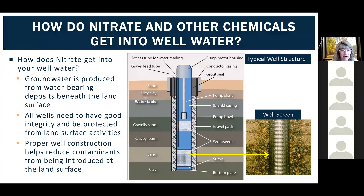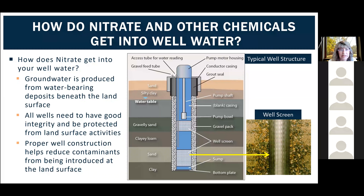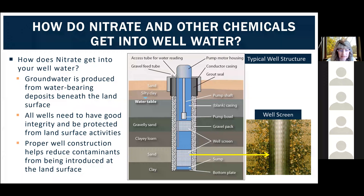Most importantly, a properly constructed well has a grout seal, placed from the land surface to the top of the gravel pack. A properly placed well seal helps reduce contaminants from being introduced at the land surface and entering the well — this might include drainage water that moves toward the well and affects the quality of groundwater pumped from it.